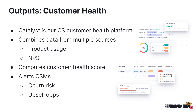Catalyst combines product usage data, NPS scores, contract renewal dates, and comprehensive customer information. These are generic screenshots from Catalyst's website that give you a flavor for what Catalyst presents to our customer success team. It can automatically alert them about accounts at risk of churn, or even upsell opportunities — customers using parts of the product they don't have licensed, or getting close to using up their free usage allocation.